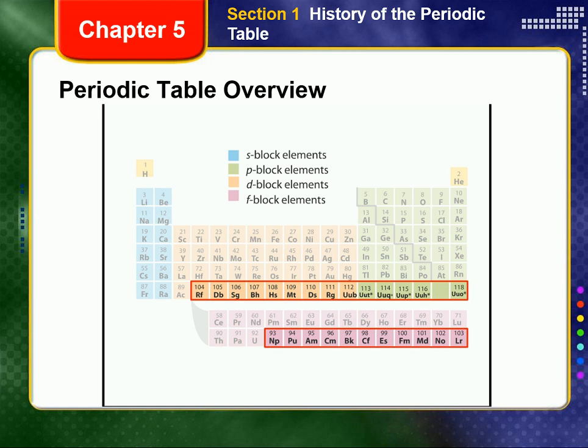At this point, you should be able to describe the modern periodic table, explain how the periodic law can be used to predict the physical and chemical properties of elements, and describe how the elements belonging to a group of the periodic table are interrelated in terms of atomic number.